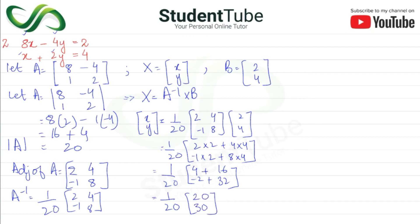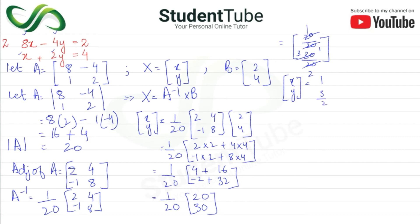This gives x equal to 20 over 20 and y equal to 30 over 20. On equating, x equals 1 and y equals 3 over 2. So the solution set is {1, 3/2}.